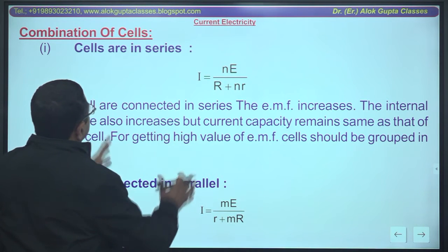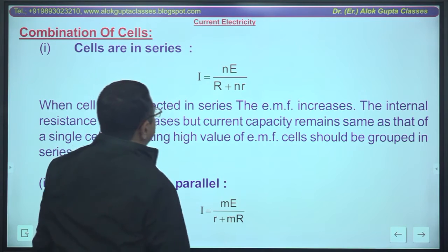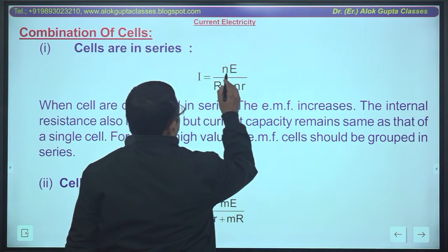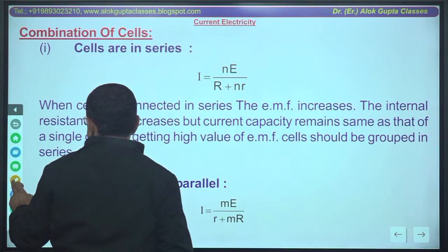Now, summary of combination of cells. When the cells are in series, current flowing is nE upon R plus nr. I have explained it to you.